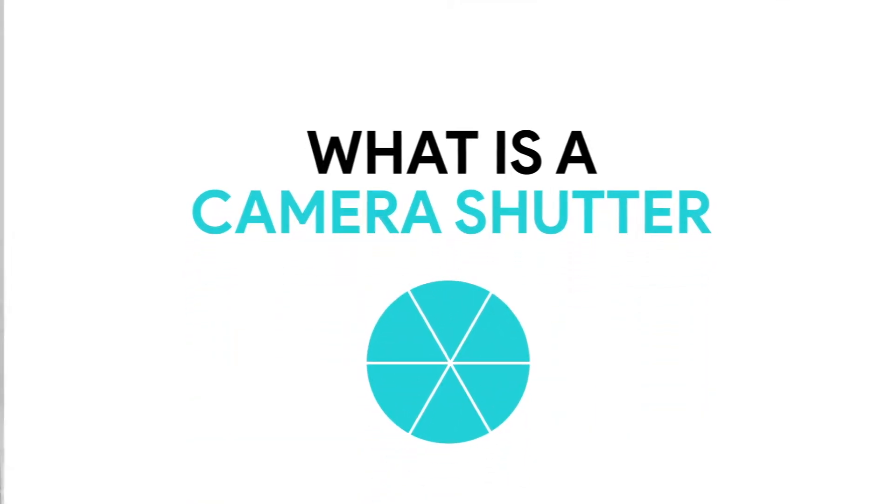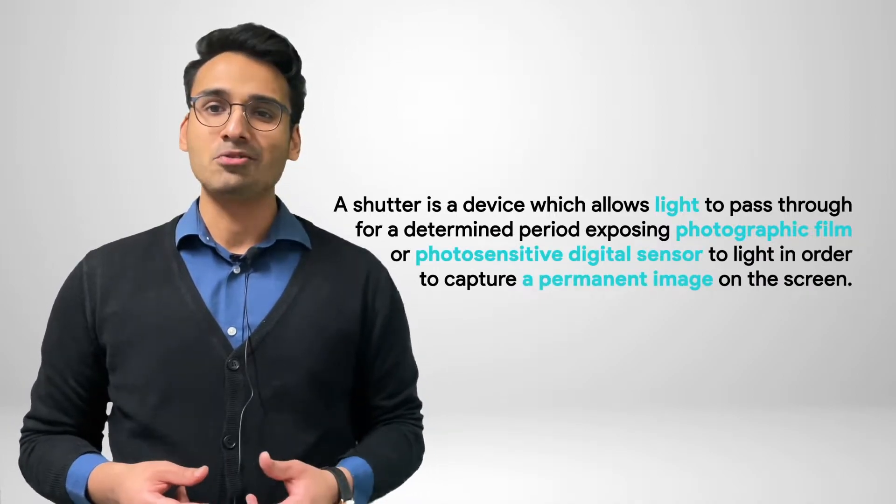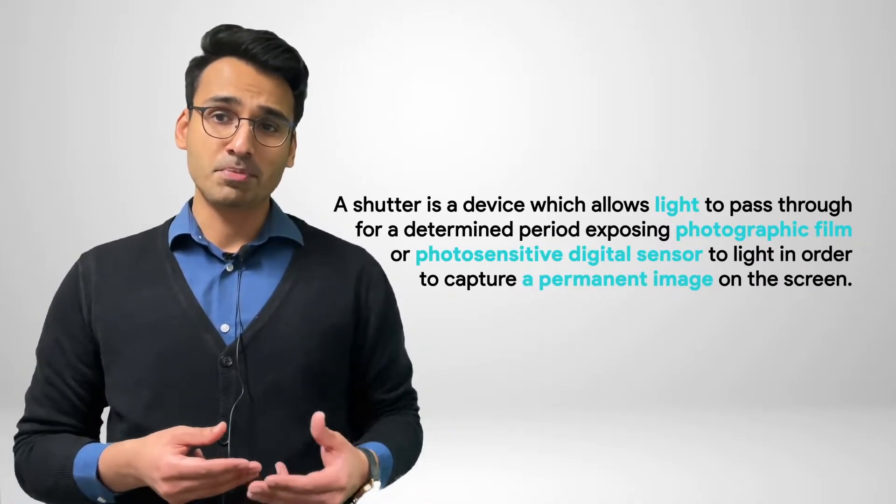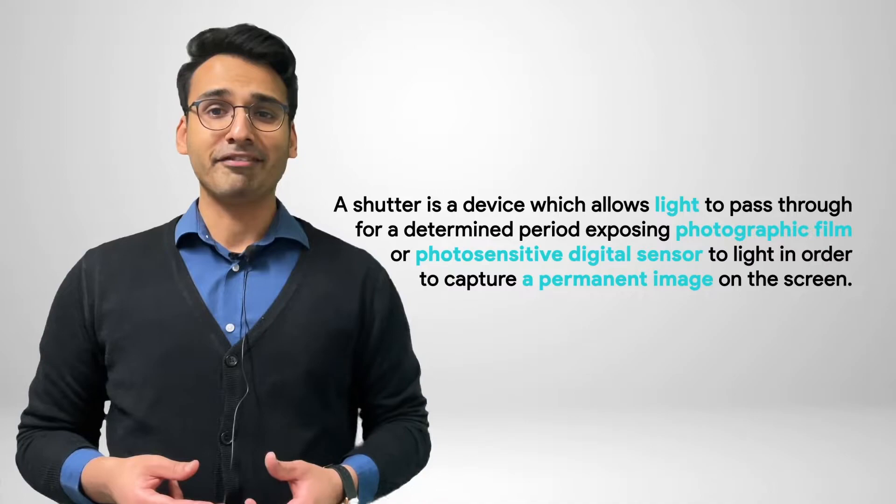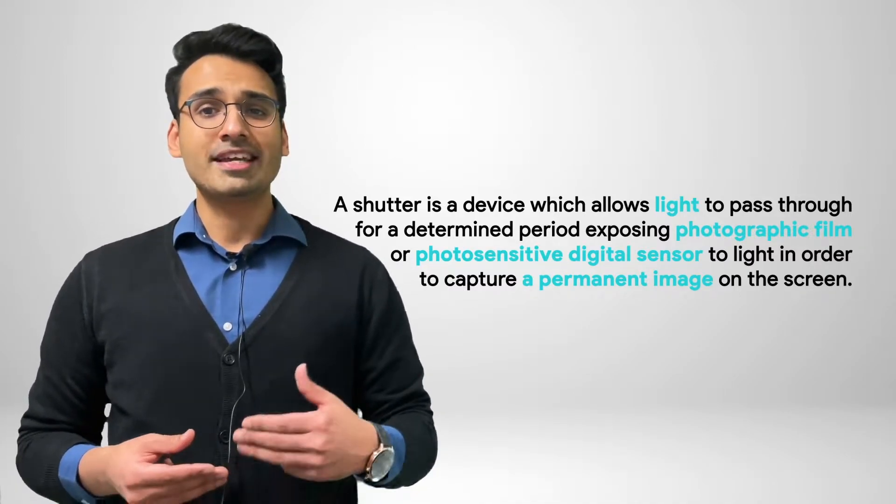Before we get into global and rolling shutters we will first discuss camera shutters in a bit more detail. According to Wikipedia, in photography a shutter is a device which allows light to pass for a determined period exposing photographic film or a photosensitive digital sensor to light in order to capture a permanent image of a scene. Basically you can think of shutters as like light policemen responsible for letting light through a camera sensor.